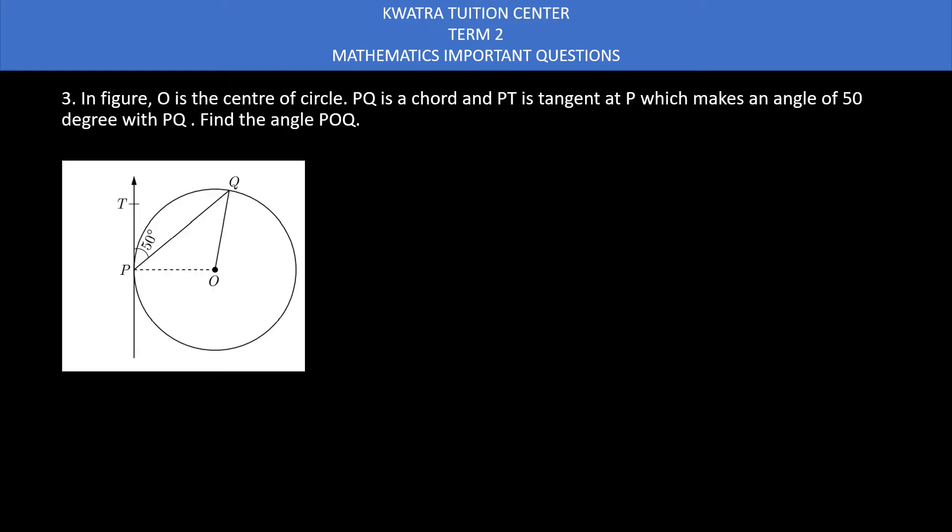Now moving to the third question. In the figure, O is the center of a circle, PQ is a chord, TP is tangent at P which makes an angle of 50 degrees with PQ. Find angle POQ. We have to find POQ, this is the main angle. But we can easily find angle OPQ first. Because TP is a tangent, this is radius. This will form 90 degrees. The angle between tangent and radius is 90 degrees. So angle TPO is 90. It's divided into two parts: TPQ plus QPO. TPQ is 50 degrees, QPO is X. This gives 90 minus 50 equals X, so X is 40 degrees.